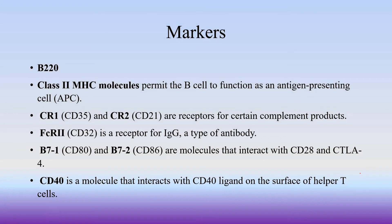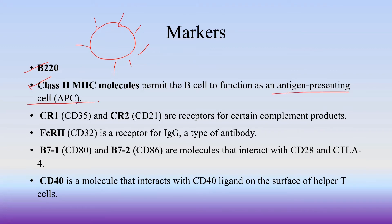B cells have specific markers used to identify them. The first marker is B220. The second marker is the MHC class II molecule, which is present on the B cell surface. Additional markers include CR1 and CR2, which are complement receptors on B cells that bind complement products and aid in B cell activation.